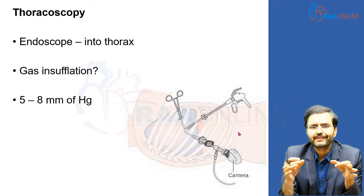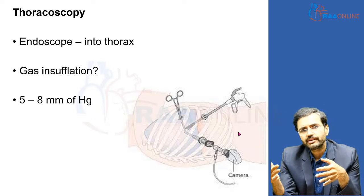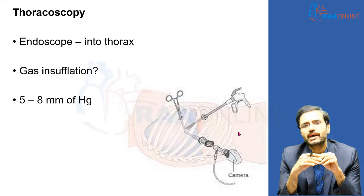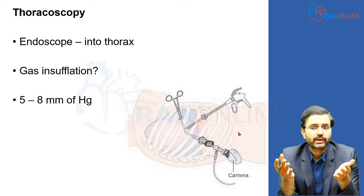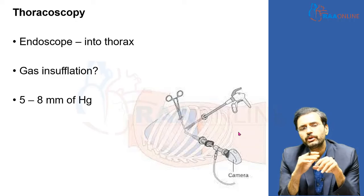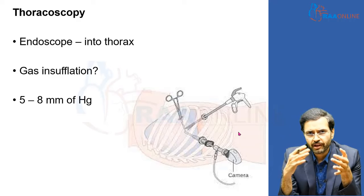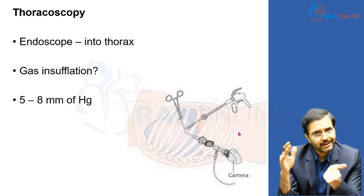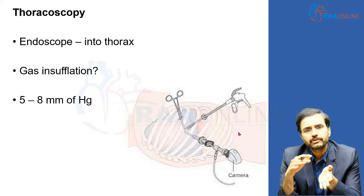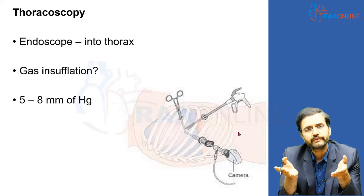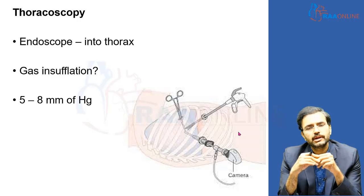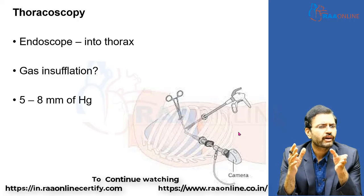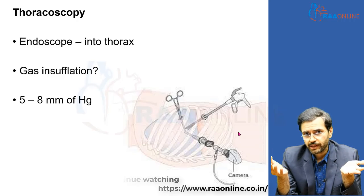Introducing a scope into the peritoneal cavity is laparoscopy; introducing one into the thoracic cavity is thoracoscopy. The thorax has a bony cage, unlike the abdomen, which prevents it from collapsing. This means you can sometimes operate on the lung without creating a pneumothorax, as the rigid thoracic cavity maintains space — especially with single-lung ventilation. However, for structures like the diaphragm or mediastinal structures, a pneumothorax of around 5–8 mmHg may be required, and the medium used is always carbon dioxide.